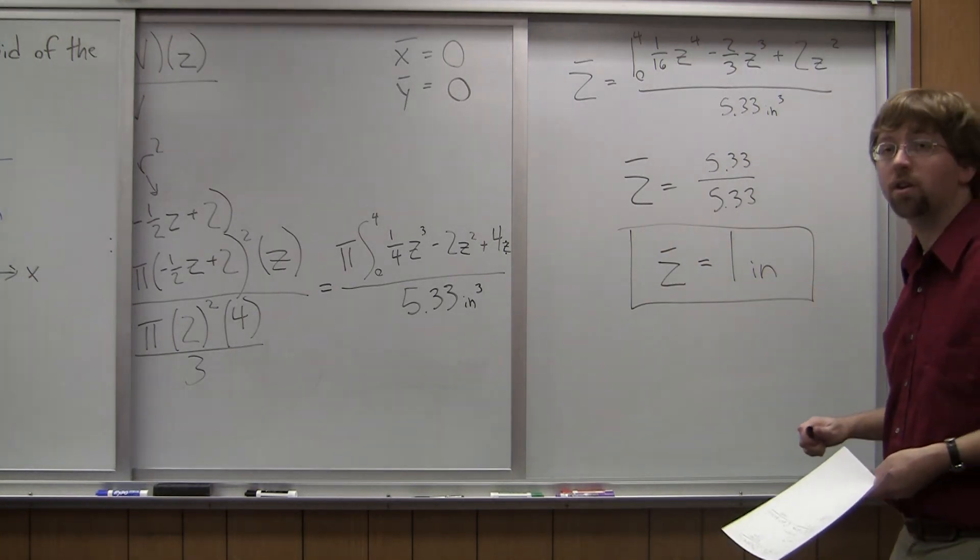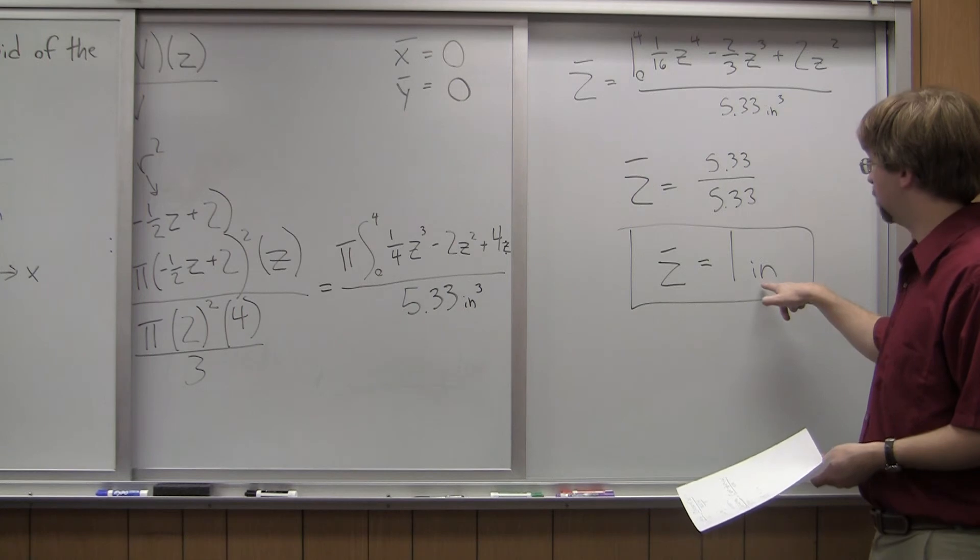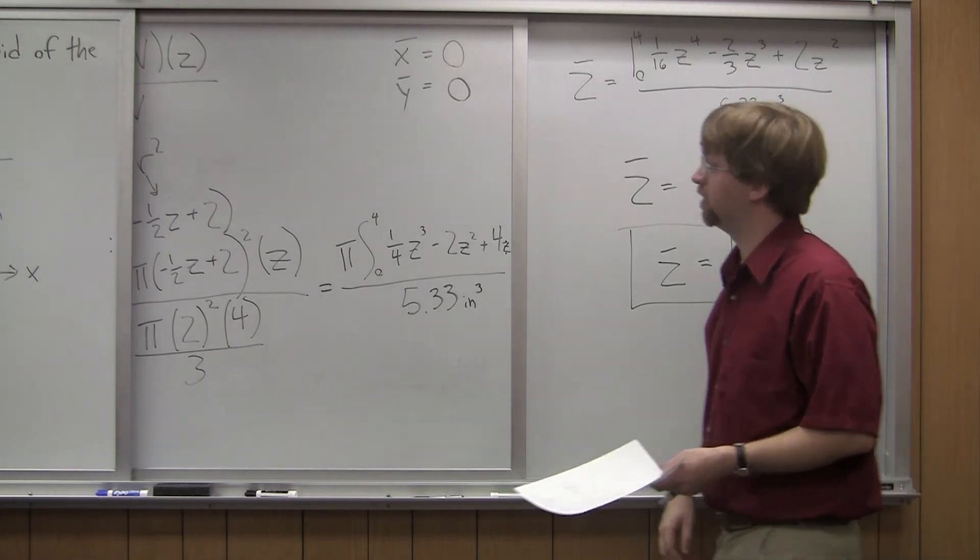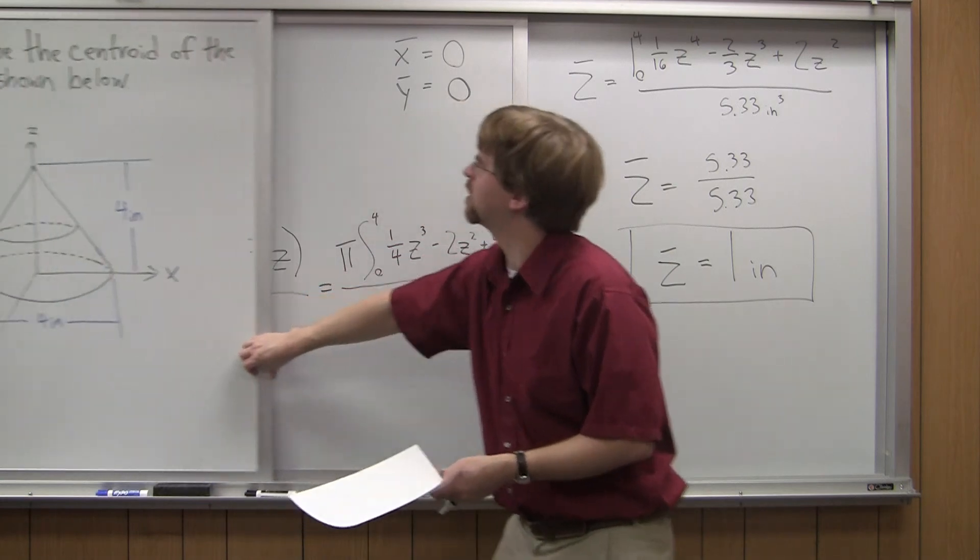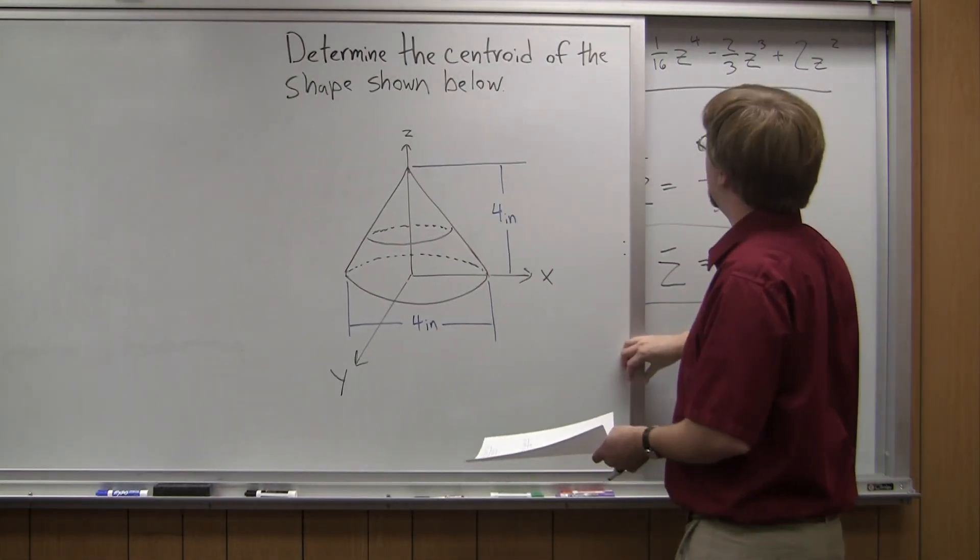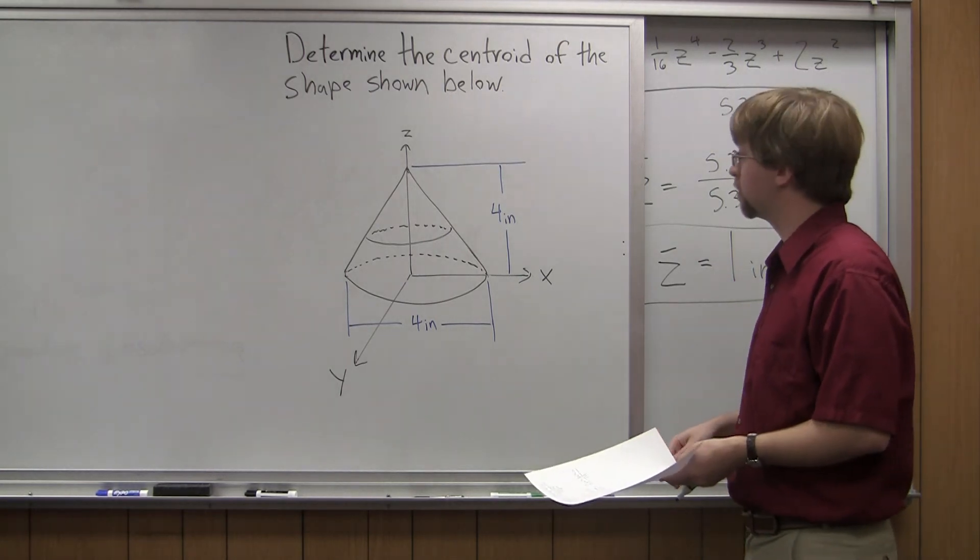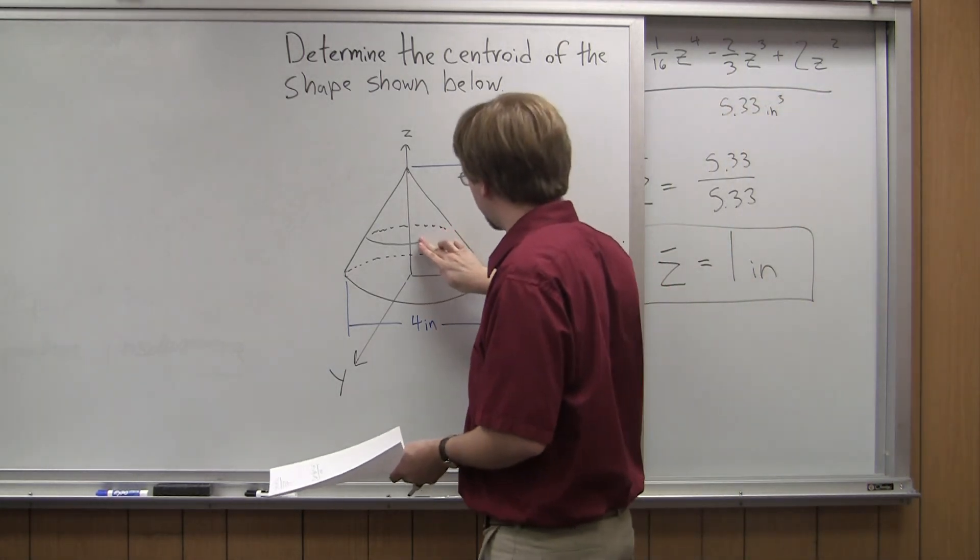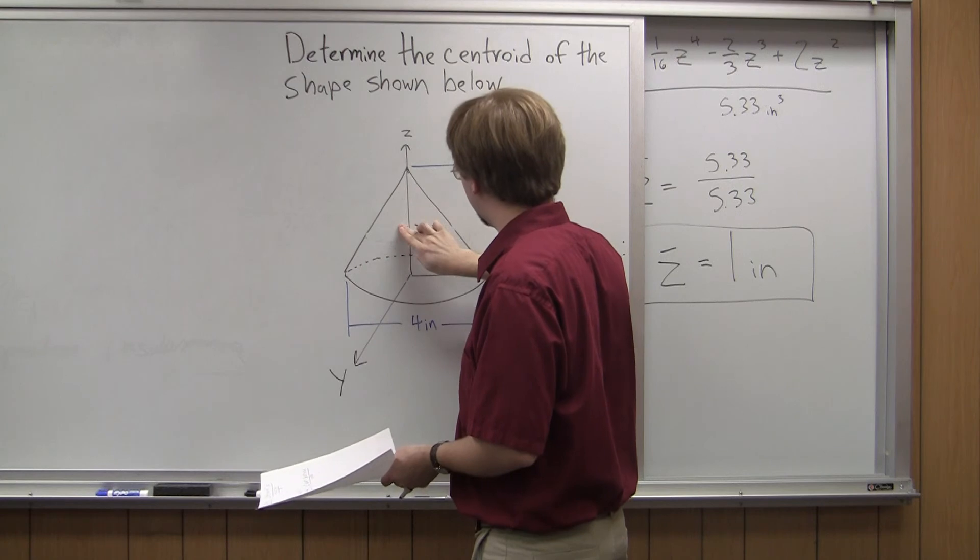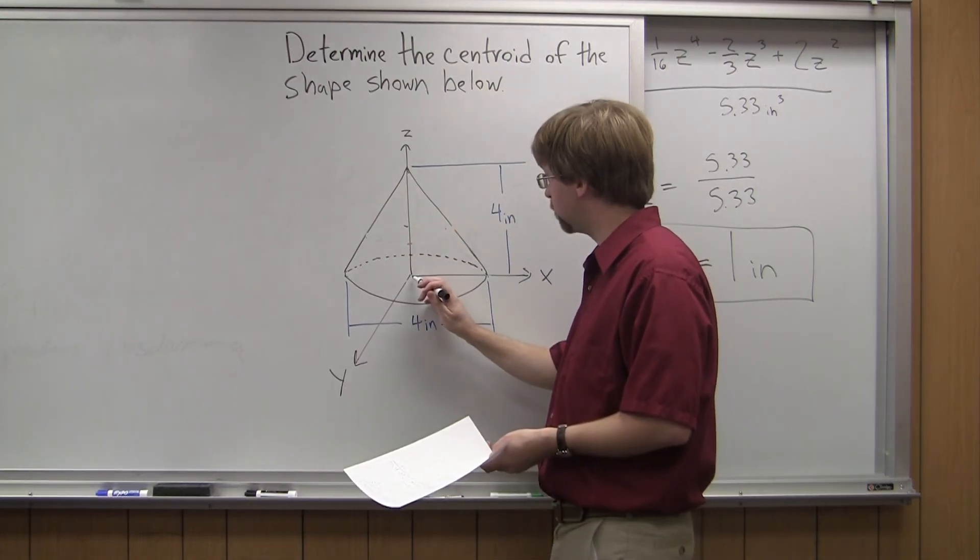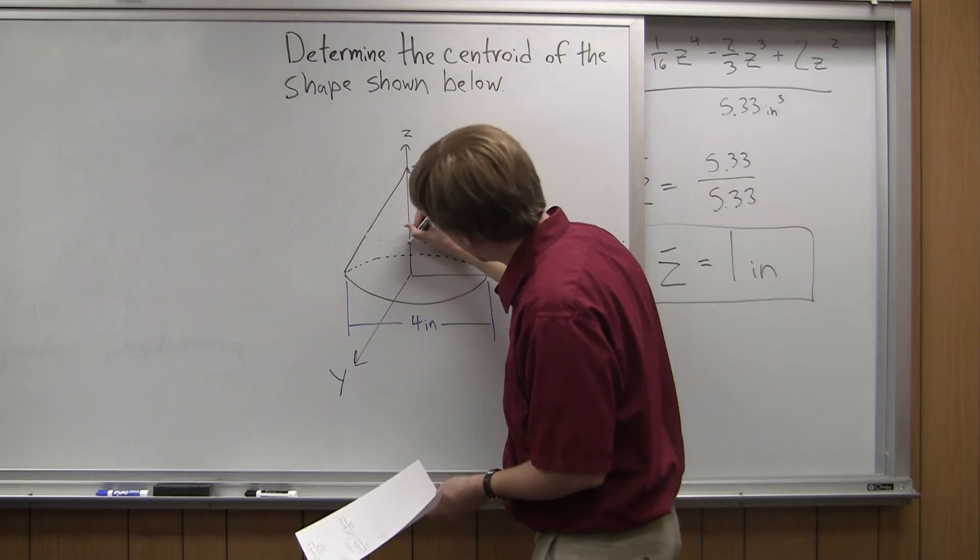So through all this work, I've proven that the z coordinate for the centroid is one inch. And that means, going back to my original diagram, I know earlier I said x-bar and y-bar were both equal to zero. So the centroid coordinate, let me erase this circle in here, is going to be x equals zero, y equals zero, z equals one inch.